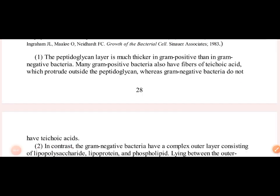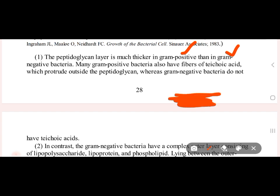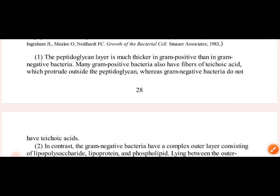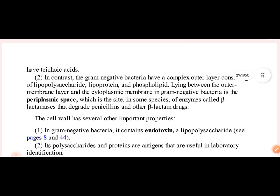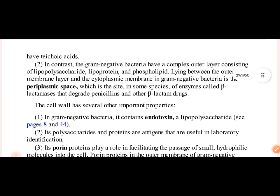The peptidoglycan layer gives us two types of bacteria: gram positive and gram negative. In gram positive, there is a thick cell wall and peptidoglycan layer. In gram negative, there is only a thin peptidoglycan layer. This is why we have these two staining differences.